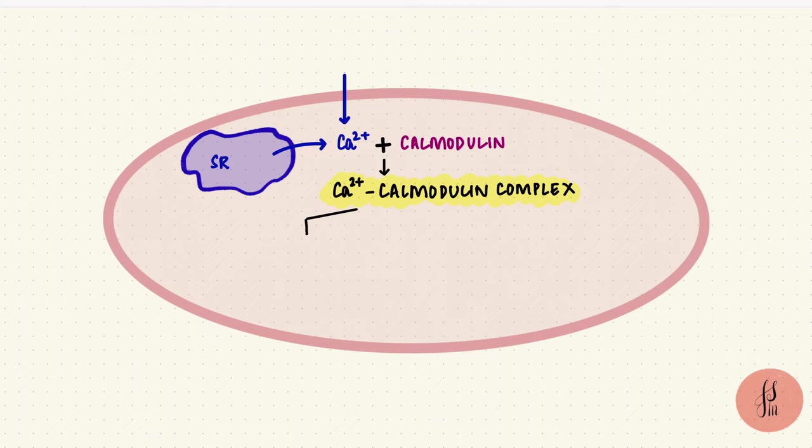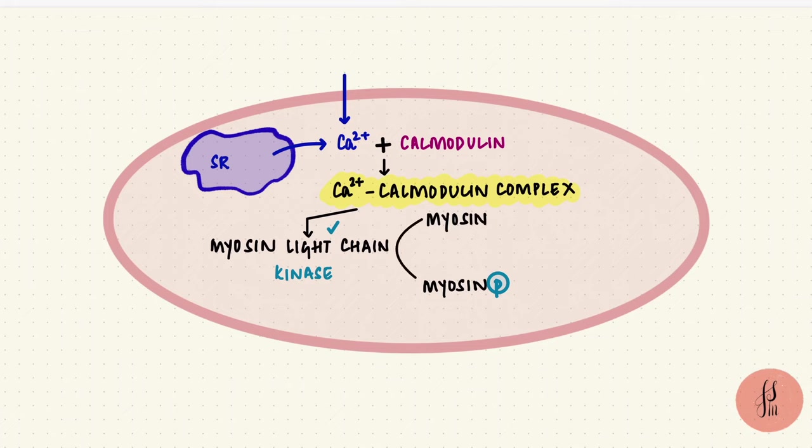This complex also activates an enzyme on the regulatory light chain of myosin called the myosin light chain kinase. This is an important enzyme because in smooth muscle, myosin needs to be phosphorylated for its ATPase activity to increase, versus skeletal muscle where it's always high. Myosin light chain kinase is a kinase, so it phosphorylates myosin, and the phosphorylated myosin is active. This can then attach to actin so that cross-bridge cycling can happen, just like in skeletal muscle.